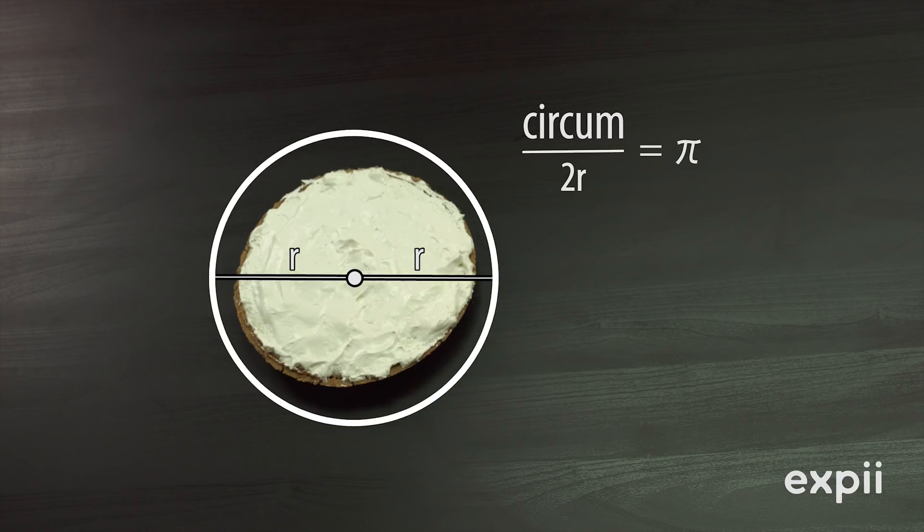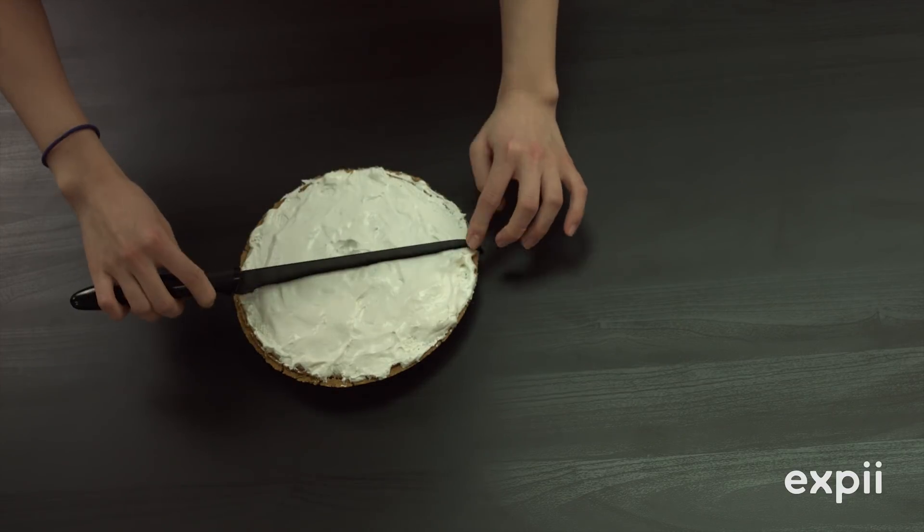Coincidentally, pi also appears in the area of a circle. Is there a connection here? Enough math, can we please get to the pie? Alright, alright.